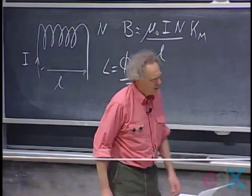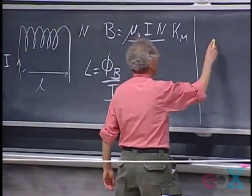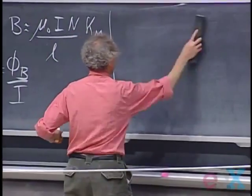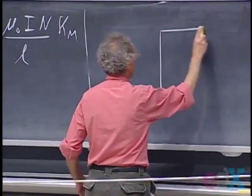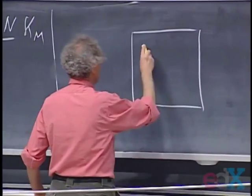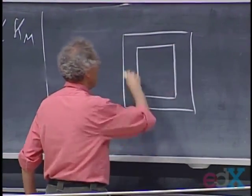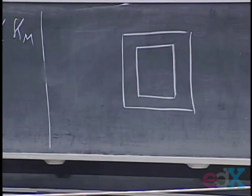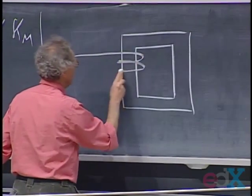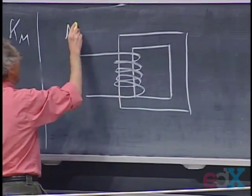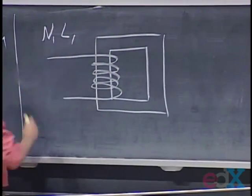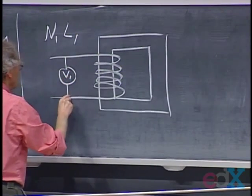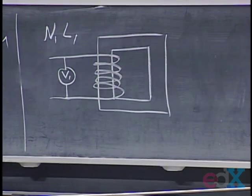Let's now turn to transformers. A transformer often comes in this shape, which is ferromagnetic material, to give perfect coupling between the left and the right sides. It also increases the magnetic field. This is the primary side with N1 windings and self-inductance L1. I put in a voltmeter to always monitor that value — I call that V1.